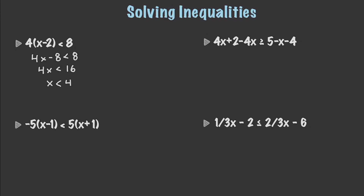In this next example, the two 4x terms are going to negate each other. So this becomes 2 is greater than or equal to 5 minus x minus 4. We subtract 4 from 5, giving us 2 is greater than or equal to negative x plus 1. Subtracting 1 from both sides gives 1 is greater than or equal to negative x. Dividing by negative 1 means we flip the inequality, so this becomes negative 1 is less than or equal to x.